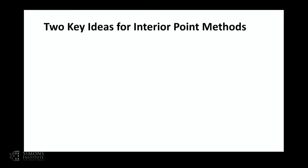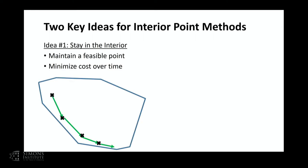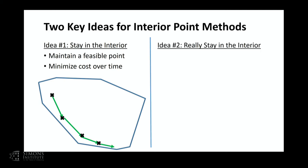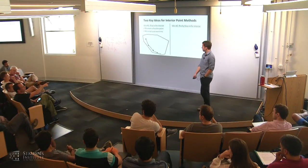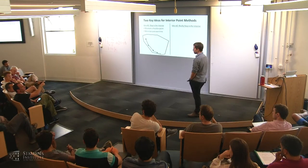Let's refresh. Interior point methods have two key ideas. The first key idea is to stay in the interior — they all work by starting in the interior of the polytope, maintaining a feasible point, and walking towards the bottom. The other key idea is to really stay in the interior.